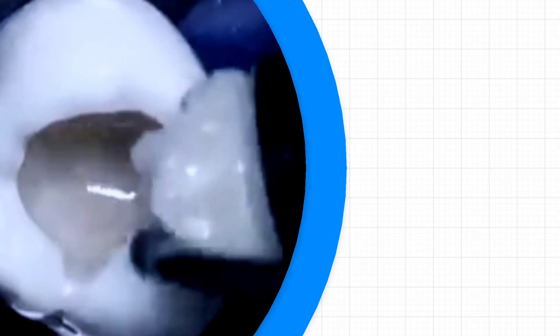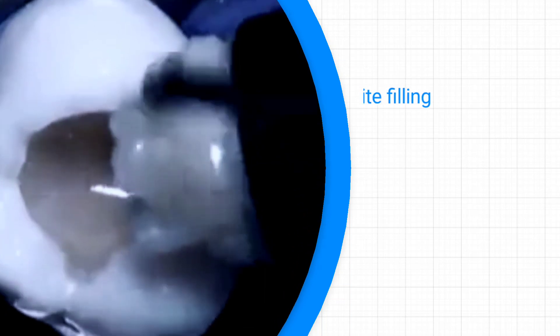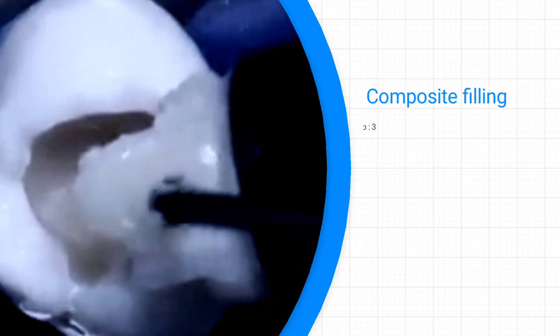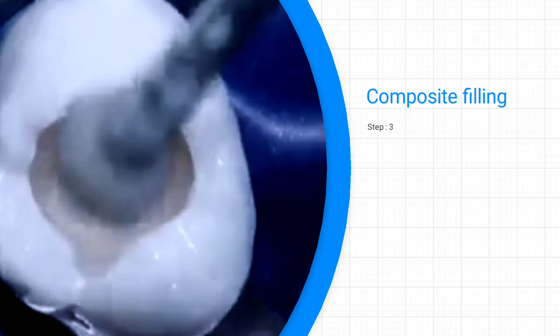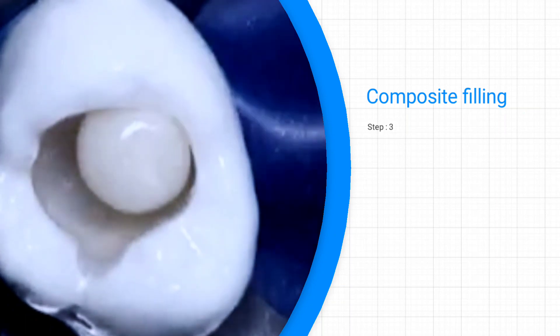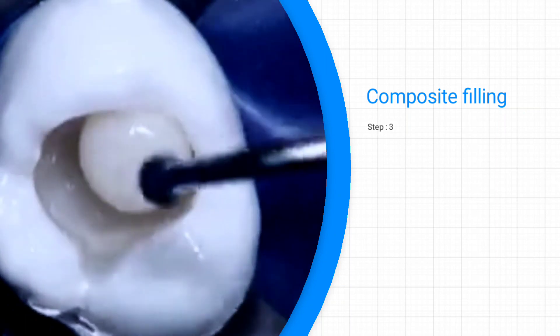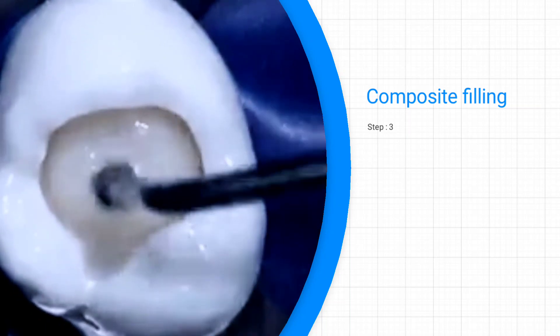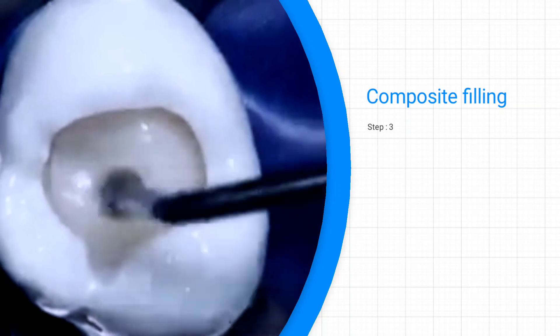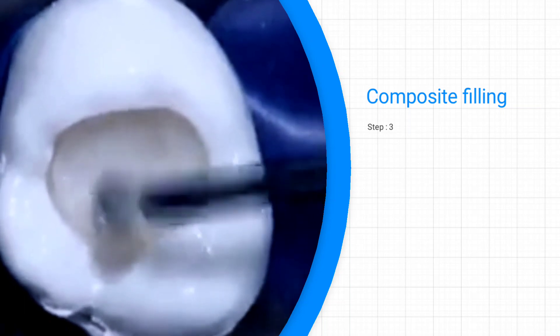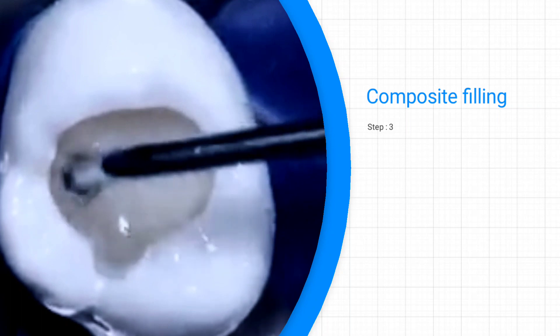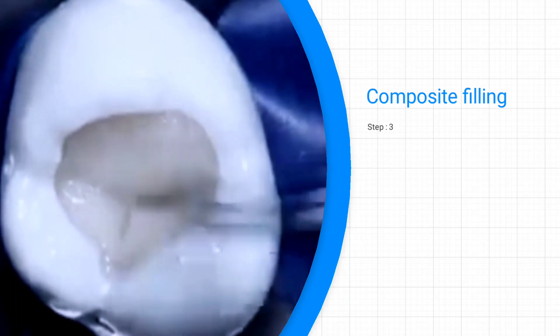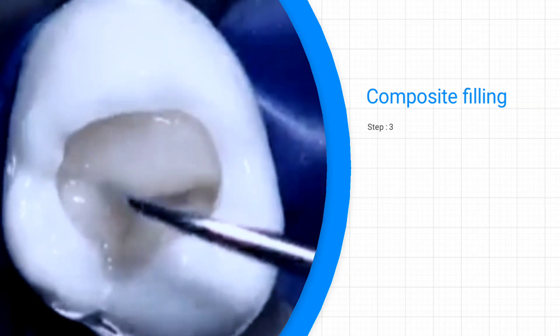Next step is to apply the composite filling, but before that, you use a shade guide to select the shade that matches the patient's tooth. Work on the composite filling that is closest to the color of the patient's natural teeth. If necessary, select a different shade for the outer surface and the inner surface, and this will make the restoration look more natural.